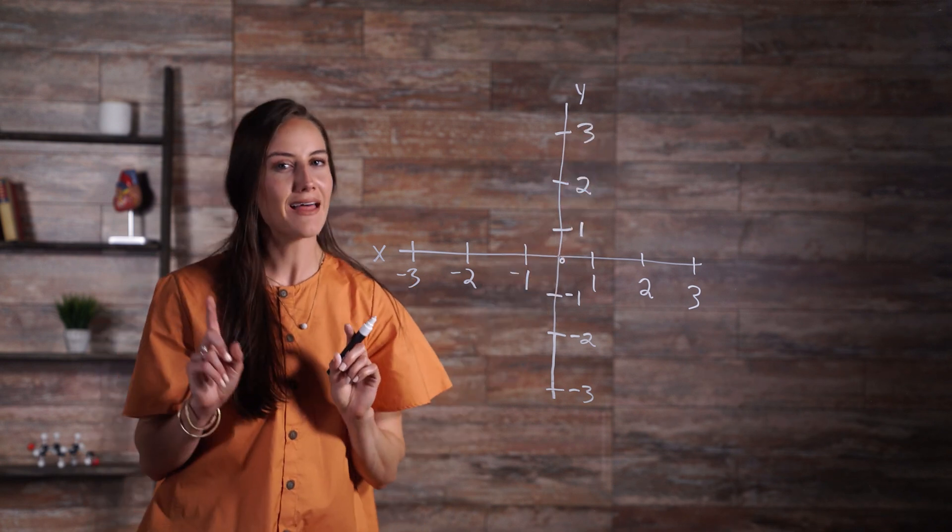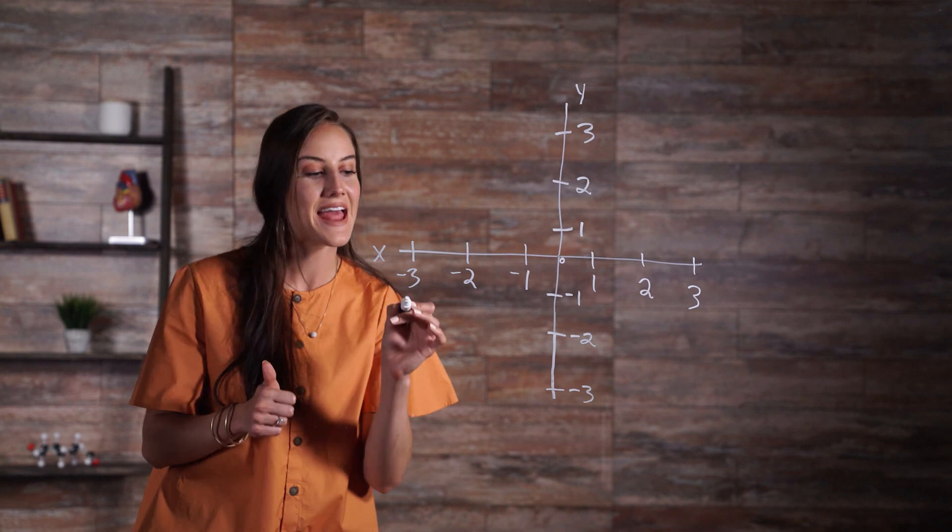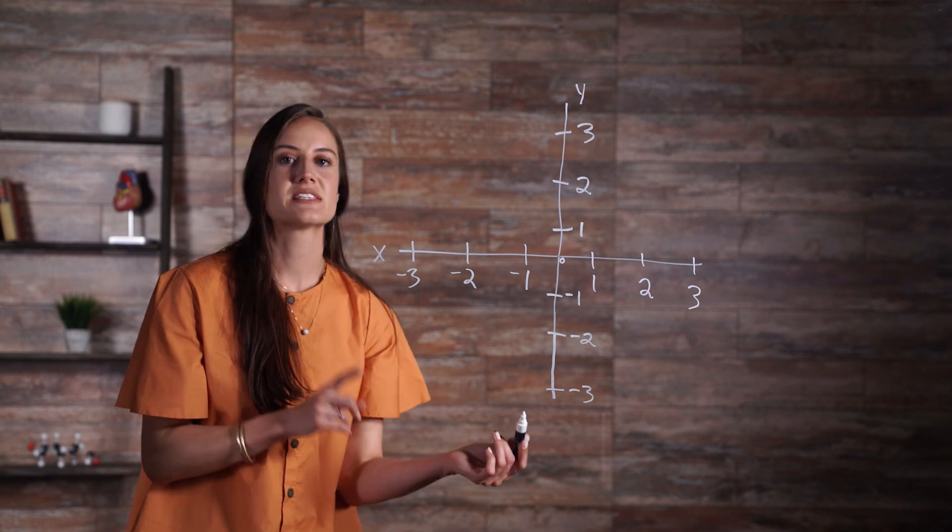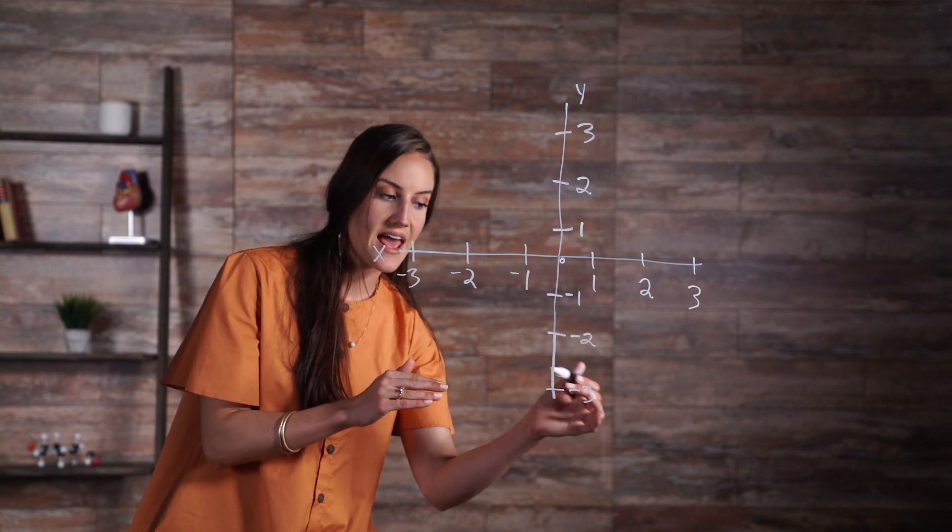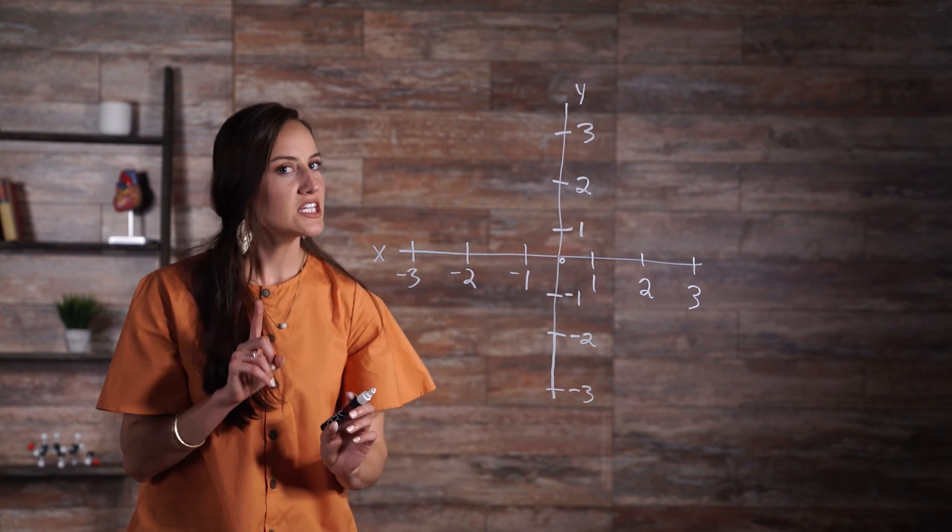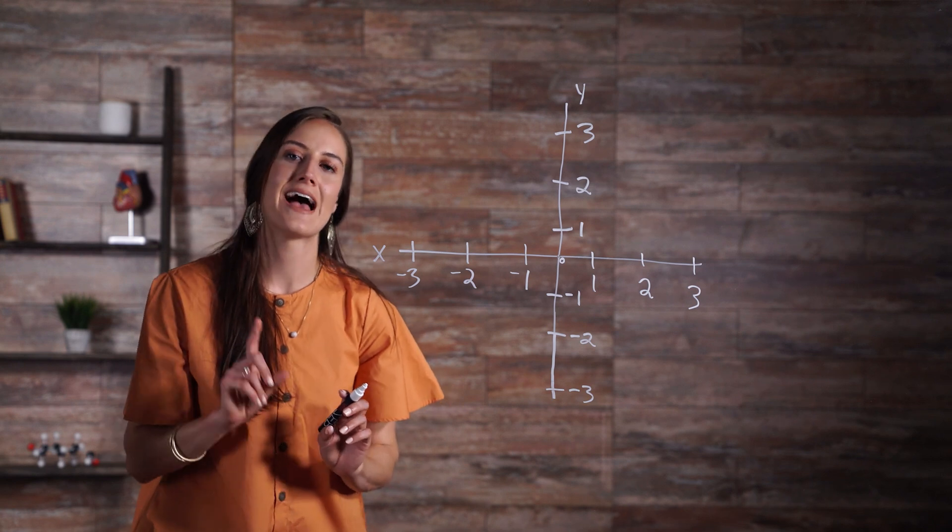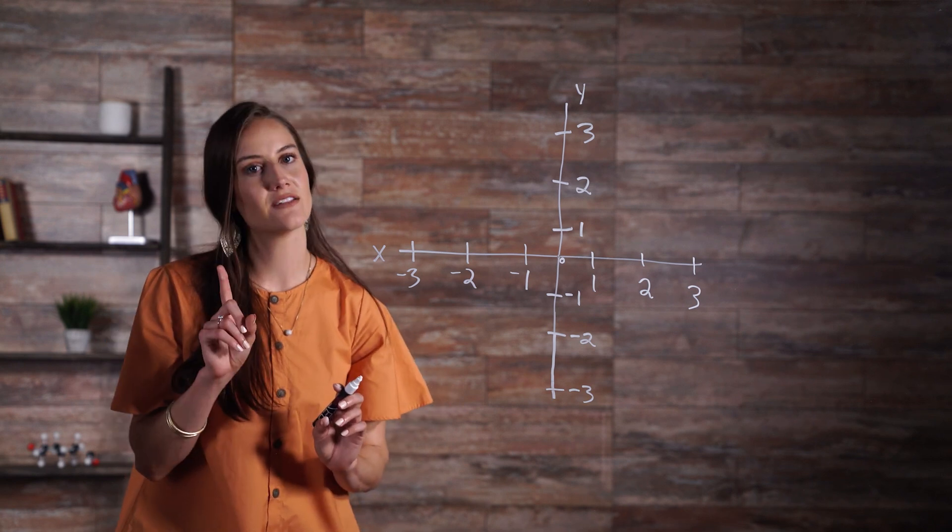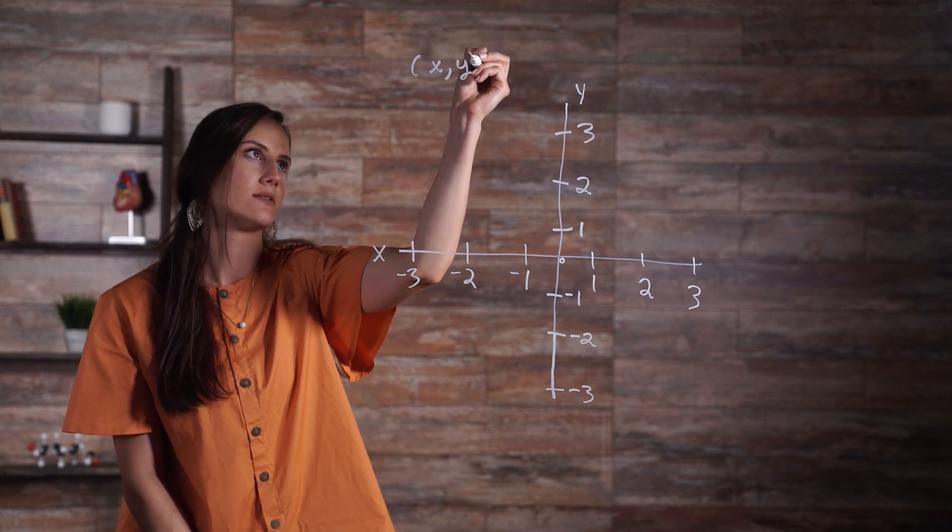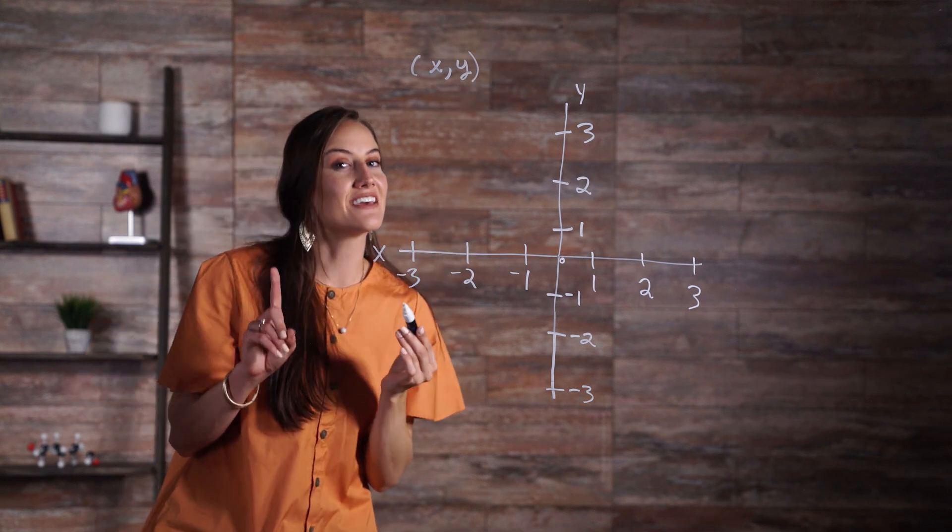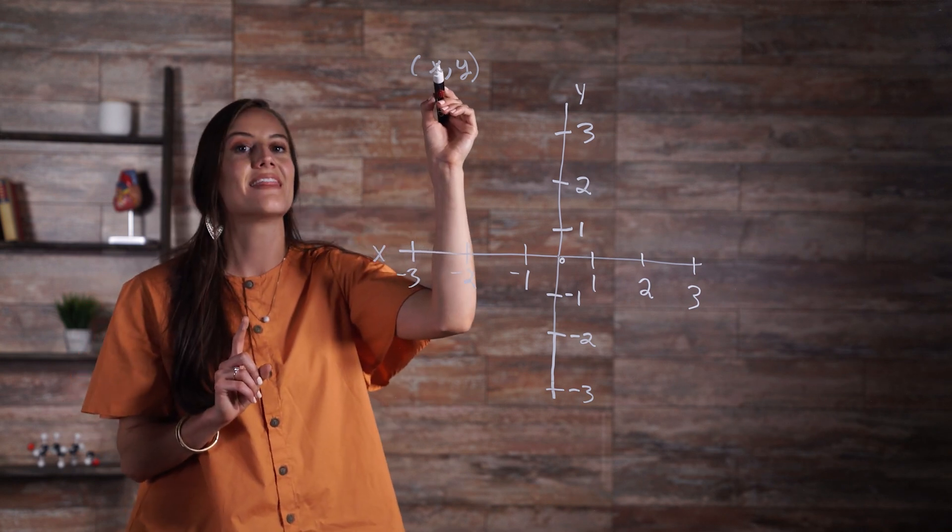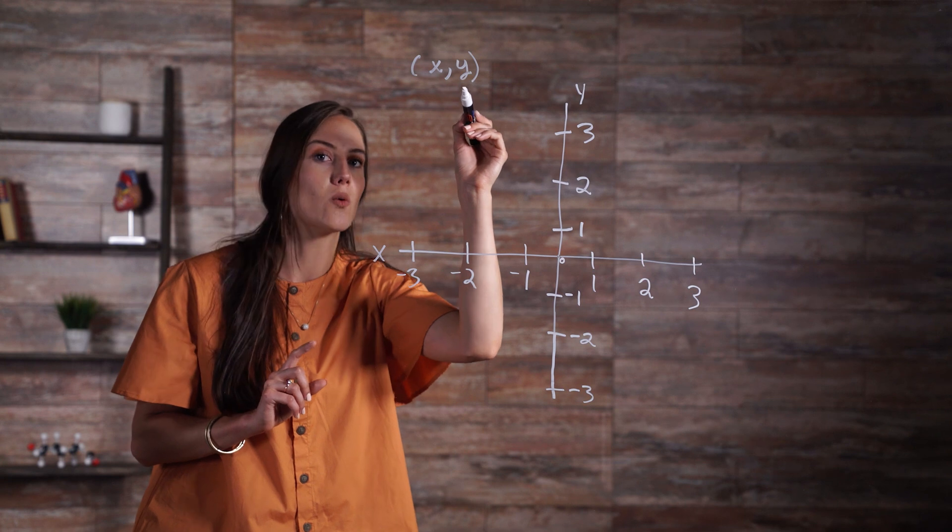As you can see, points to the left of the origin have a negative x value, whereas the points to the right of the origin have a positive x value. Similarly, points below the origin have a negative y value, whereas points above the origin have a positive y value. Each point plotted on the plane has a set of coordinates written in the following manner: x, then y, meaning for any given point, we write its location on the x-axis first, then it's followed by the location of the y-axis.